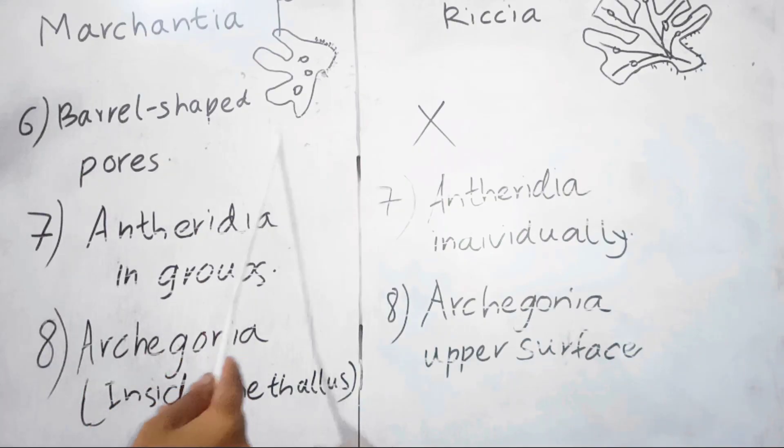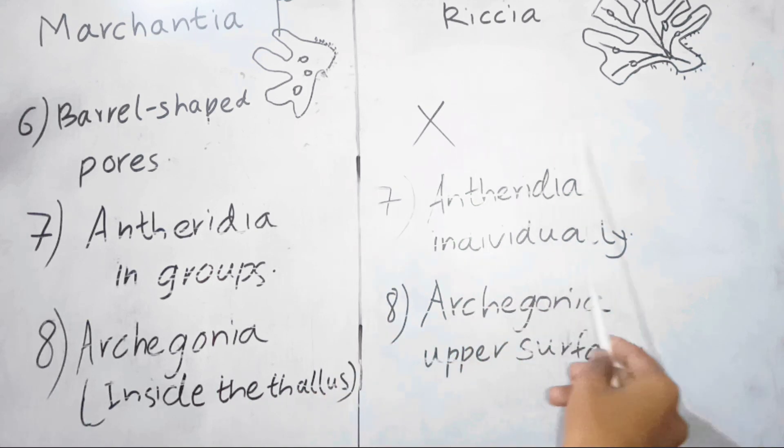In Marchantia, barrel-shaped pores are present on the upper surface of the thallus. In Riccia, barrel-shaped pores are absent.